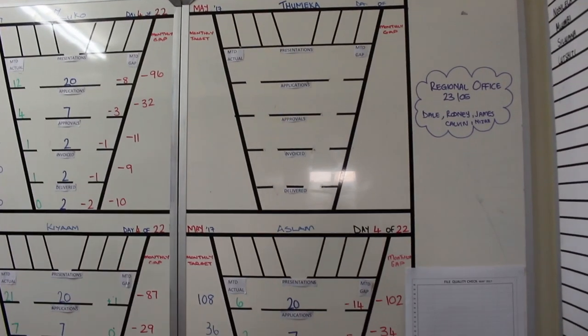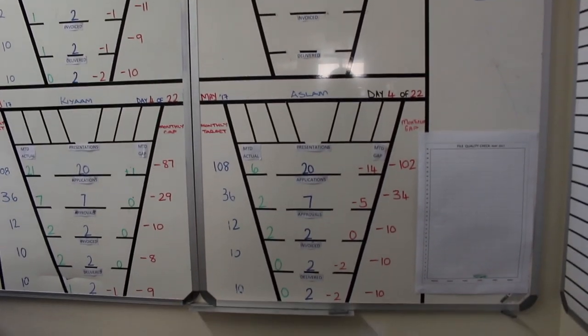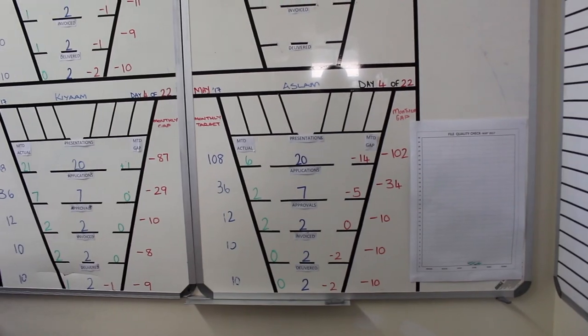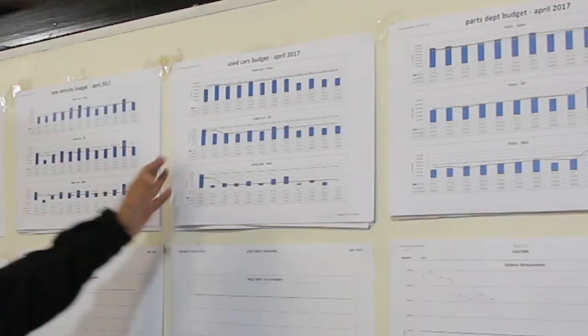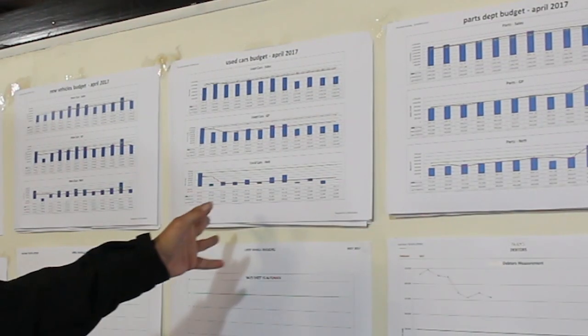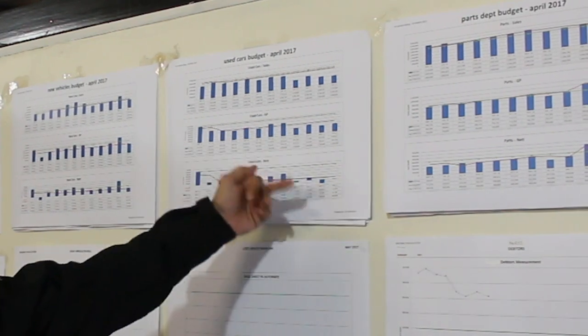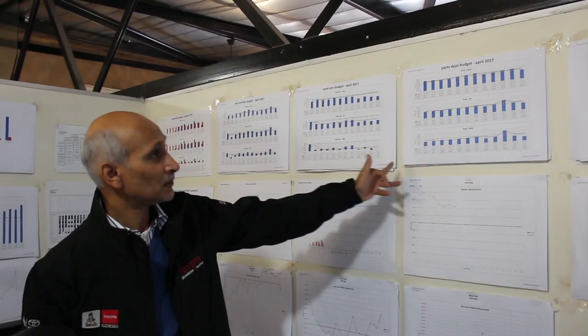Then on the side here I've got my actual figures compared to what I budgeted for. This is each department on its own, actual budget. It gives me the turnover, my gross profit, and my net per department.